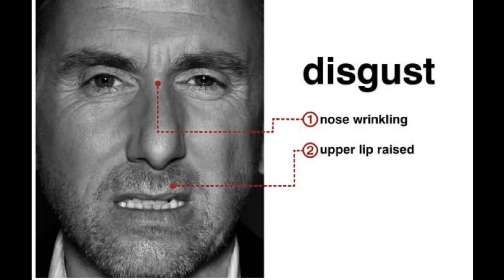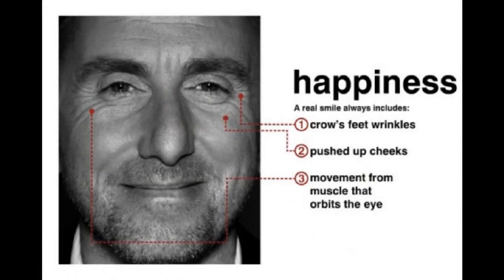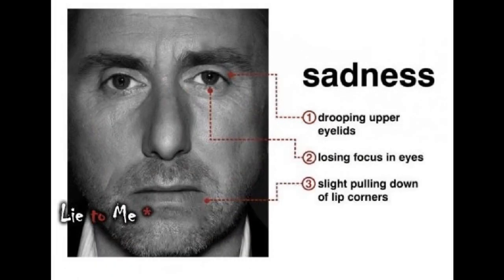Fear, anger, disgust, happiness, contempt, sadness, and surprise. Here are the seven universal microexpressions.